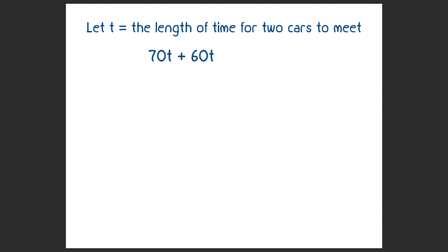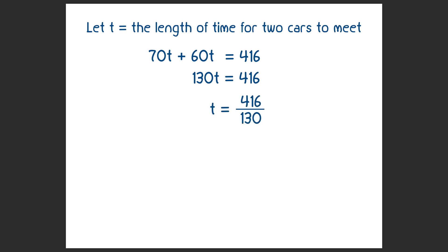So we have two distances in the table: 70t represents the distance for the red car, 60t for the blue car, and we know they must travel a total of 416 miles before they meet. We can now set up an equation: 70t plus 60t equals 416. Combine like terms: 130t equals 416. Divide both sides by 130 and reduce to get t equals 3 and one-fifth hours.